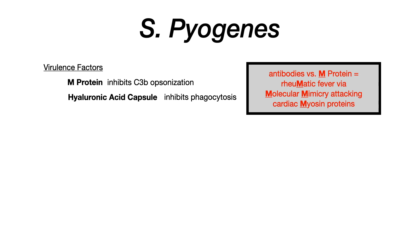Critically, antibodies the body forms against the M protein in Strep pyogenes are responsible for the pathophysiology of rheumatic fever. The mnemonic here centers on the letter M: M protein causes rheumatic fever via a process called molecular mimicry — M's everywhere.